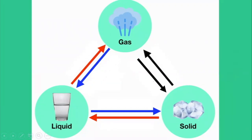Let's repeat one more time all physical changes. There are six of them. We have three states of matter: solid, liquid, and gas. And we have six physical changes.